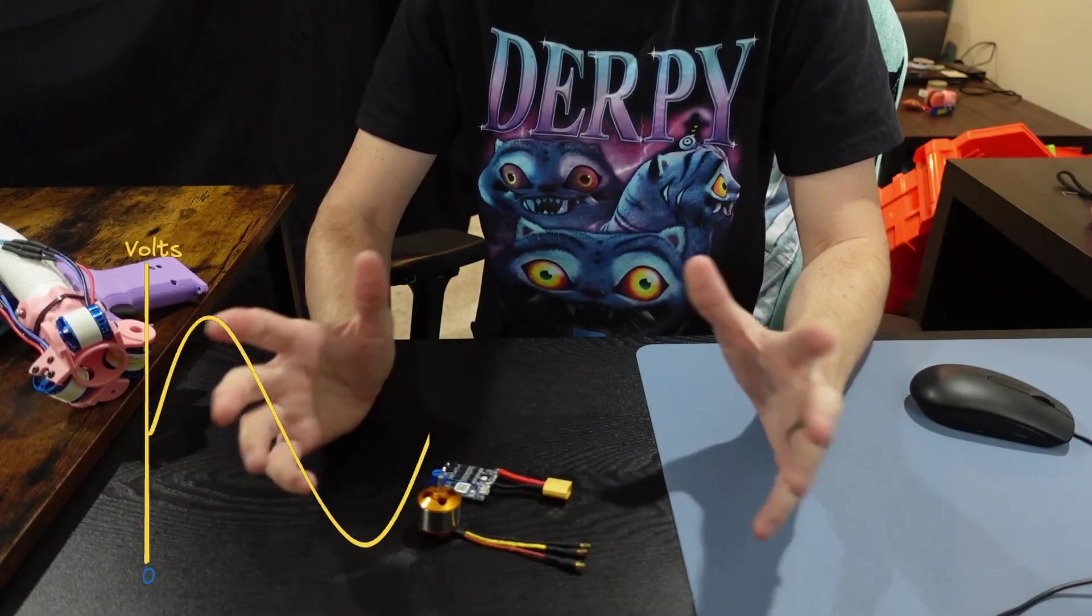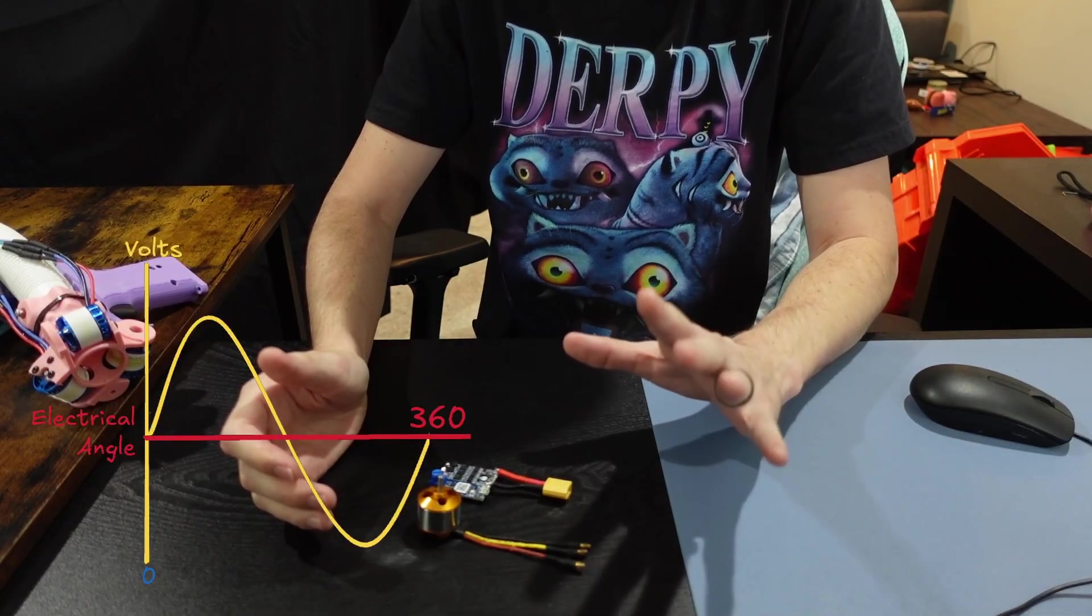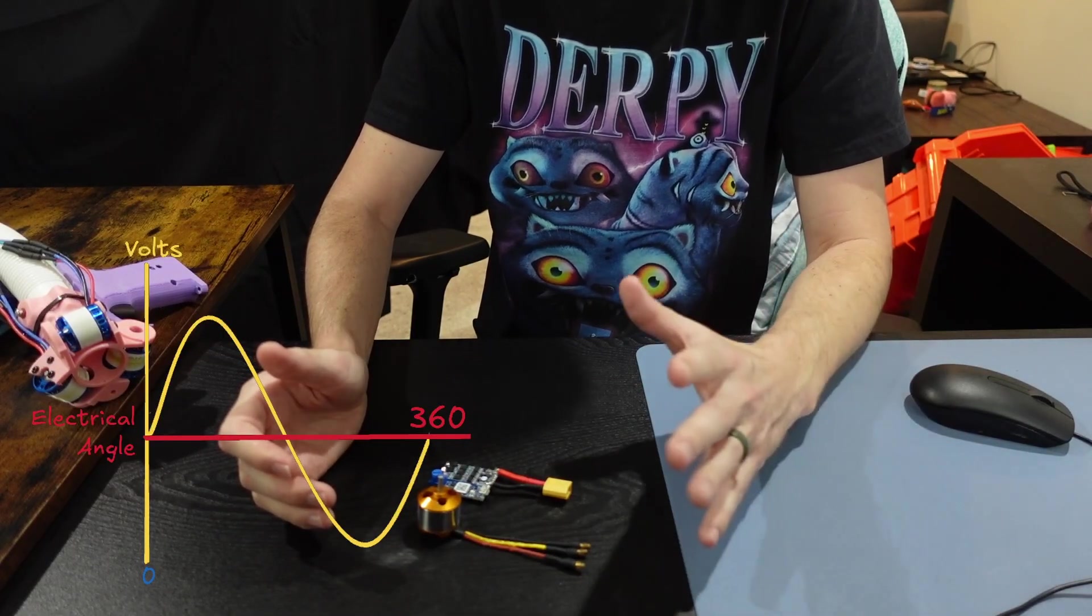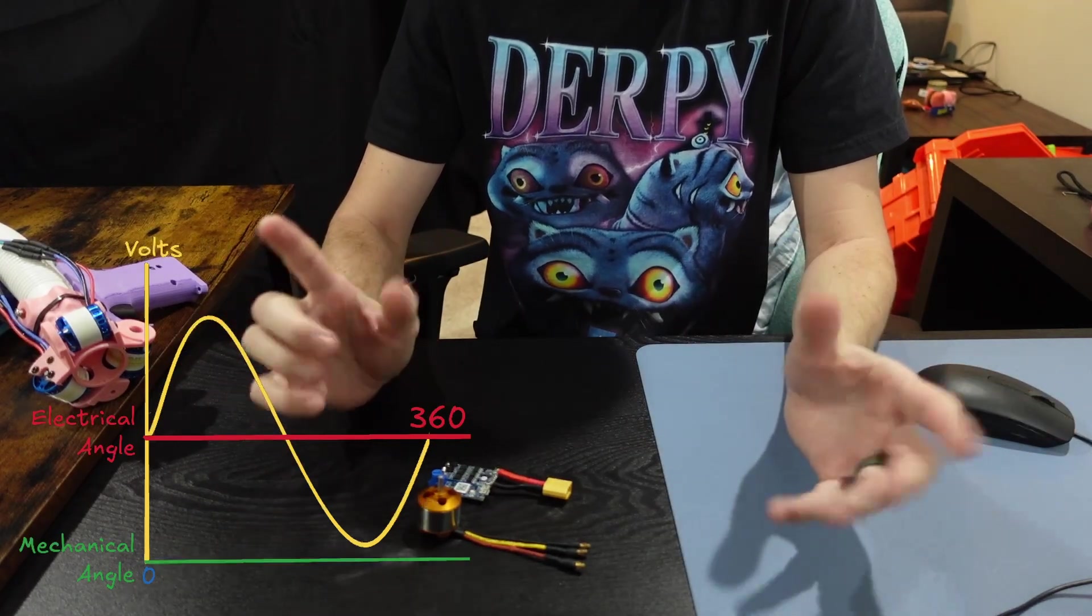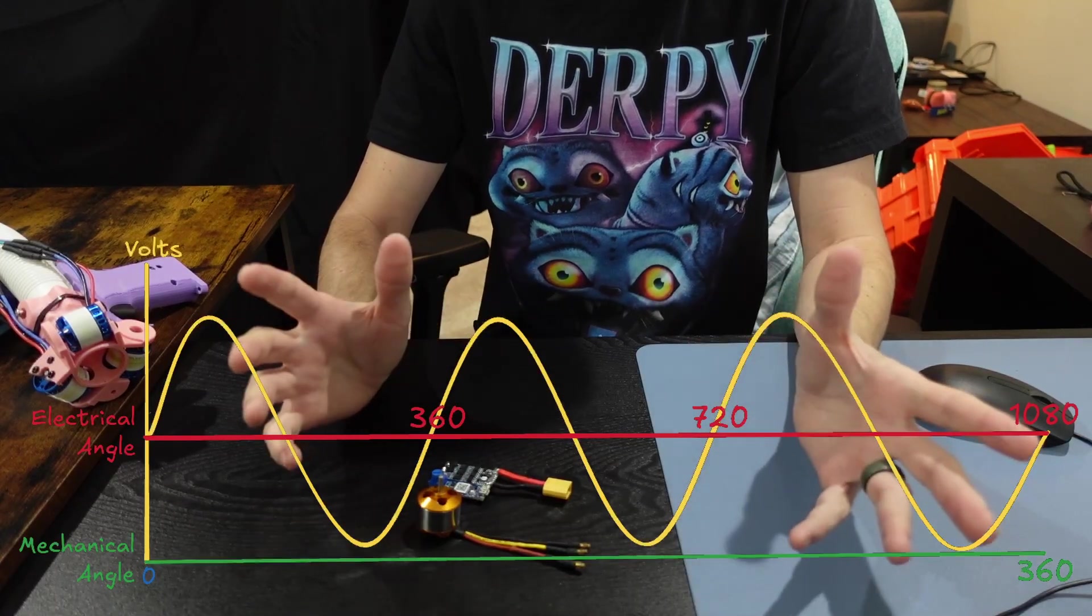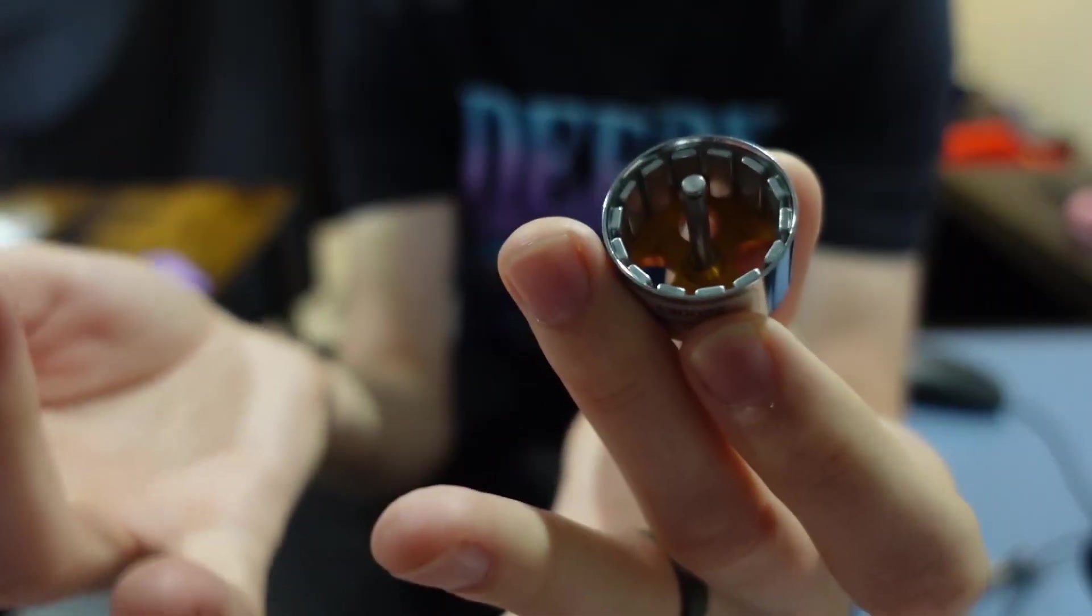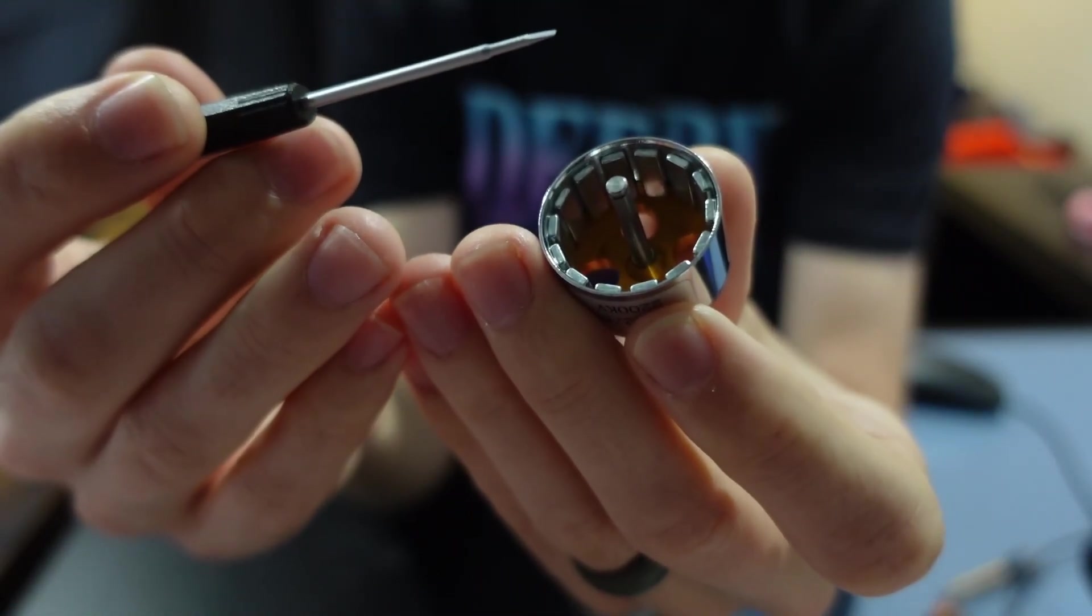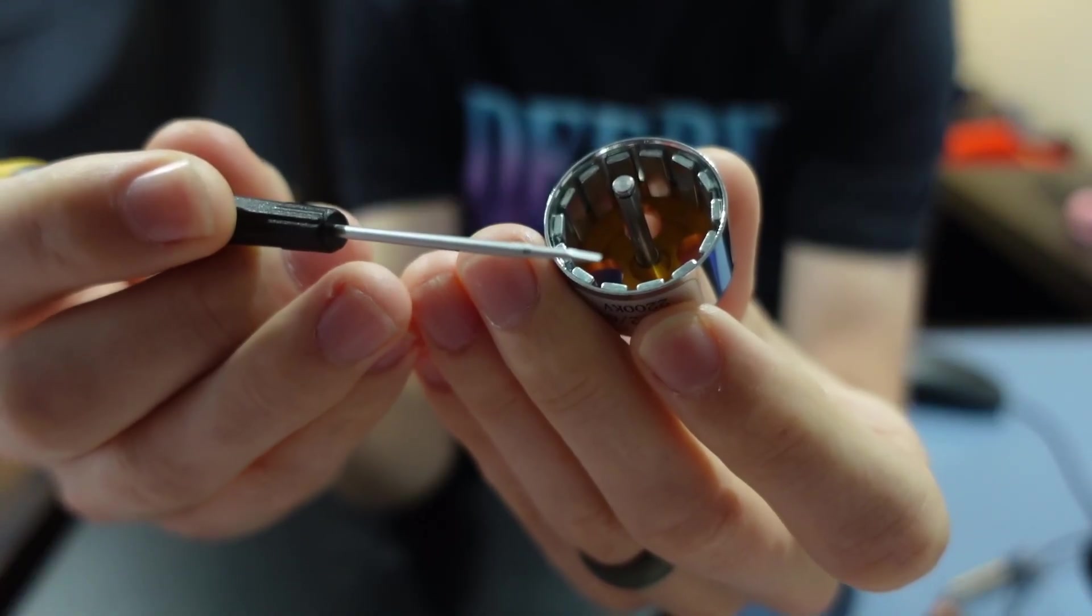This voltage can be thought of as an electrical angle. And it will correspond to the motor's mechanical angle or physical angle zero to 360 degrees. But one full cycle of the electrical angle does not usually directly correspond to one full rotation of the mechanical angle. This relationship changes depending on the characteristics of your motor, specifically the number of pole pairs in your rotor.